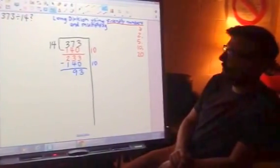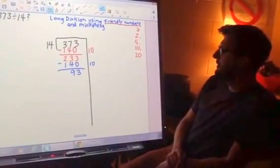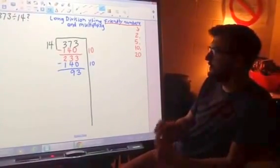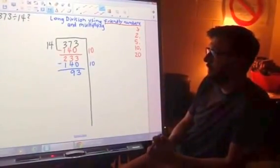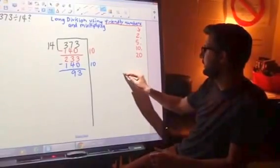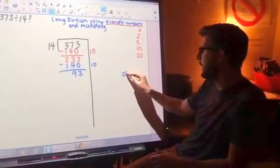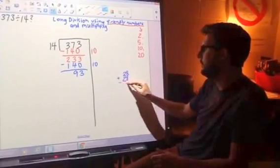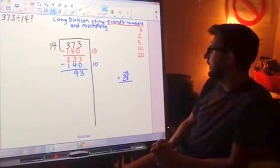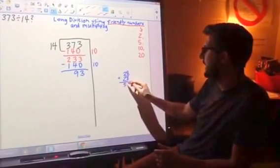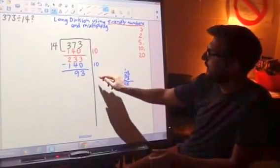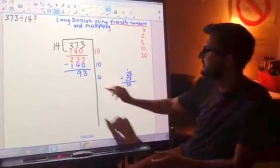This is where it can get a little bit tricky. 14 into 93. Well, we know it goes at least twice, because 14 times 2, or double 14, is 28. And maybe we can double that again. So here, at this point, I would encourage students to show the work on the side if they can't do it mentally. And they will see that 4 times 14 is 56.